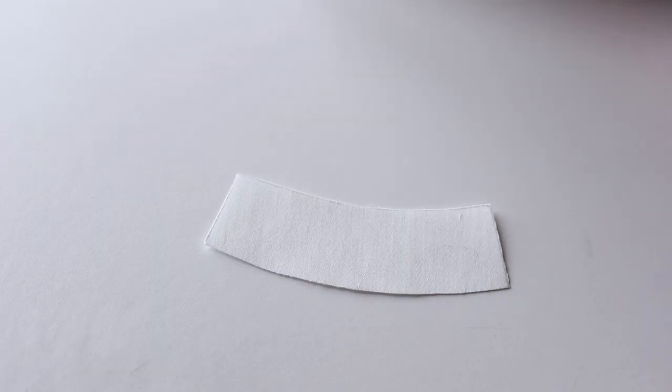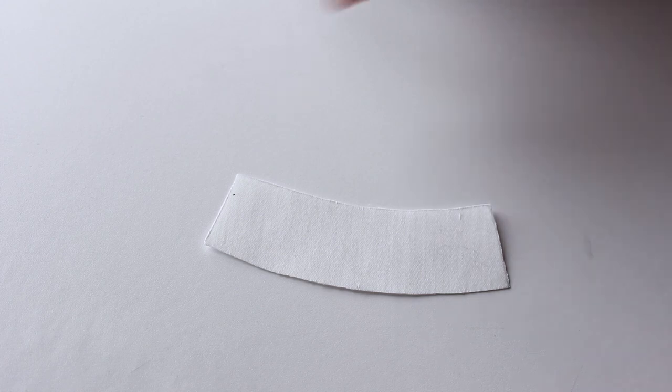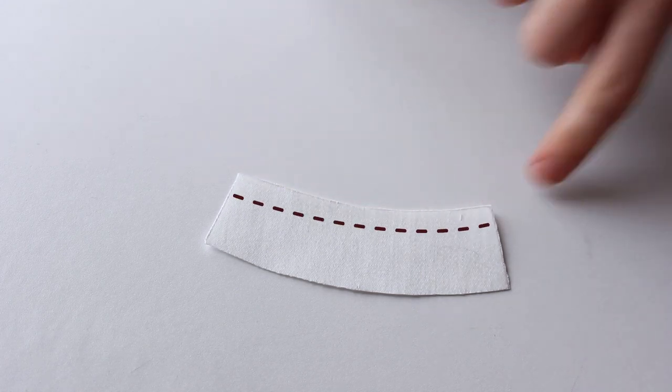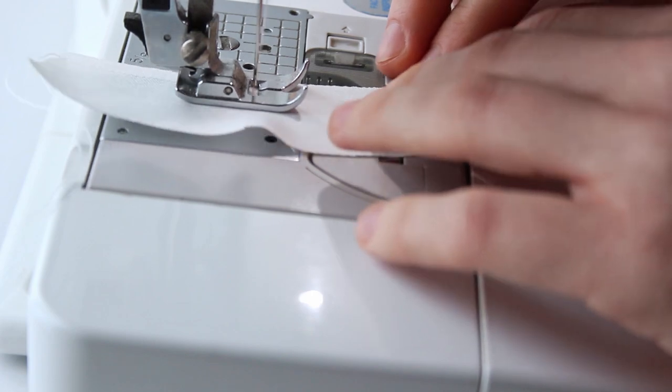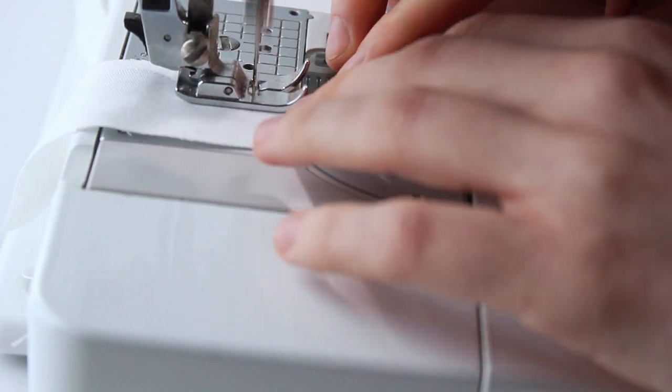Now take the neck piece. You need to press down the seam allowance on the top curve. Make a guide for it by running a basting stitch on the top part.